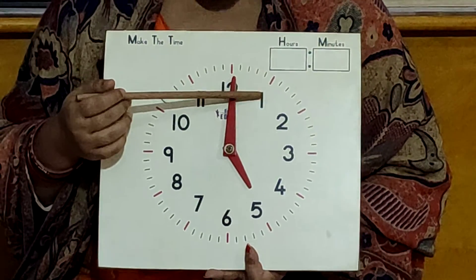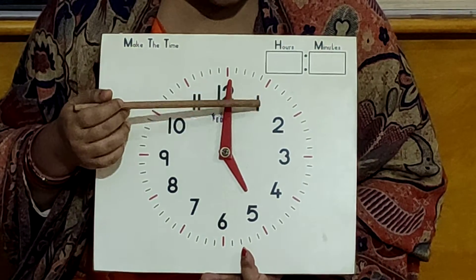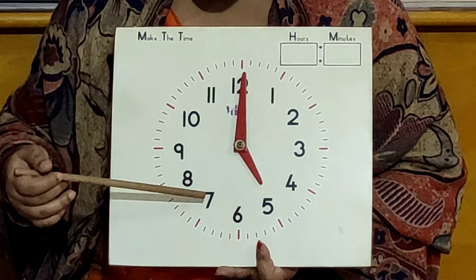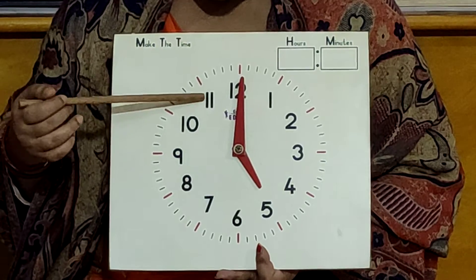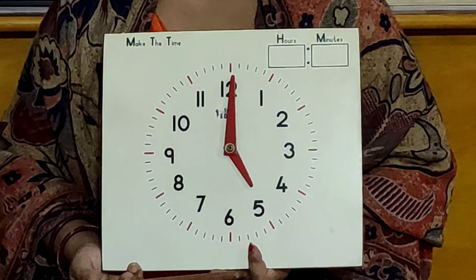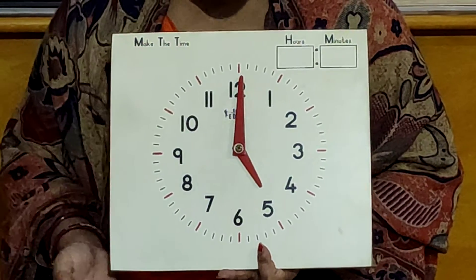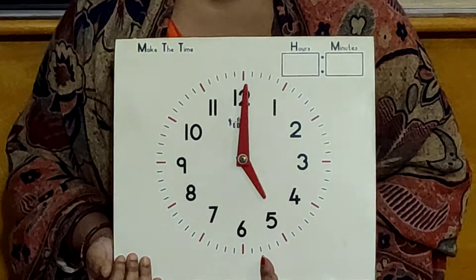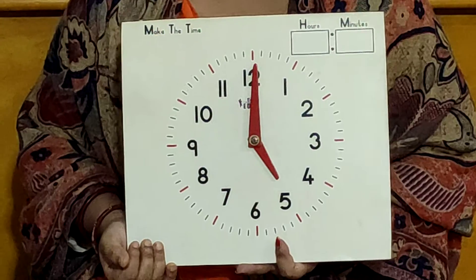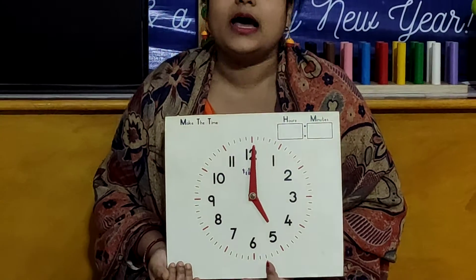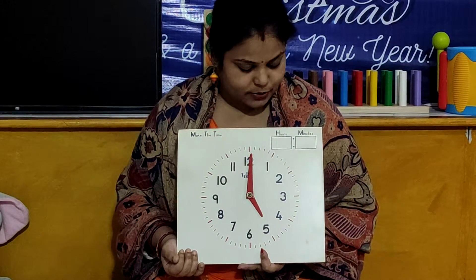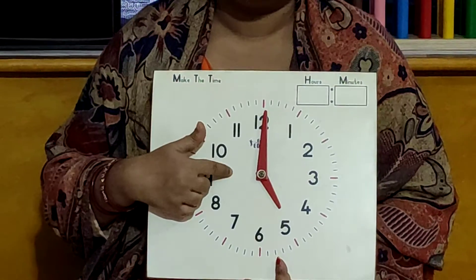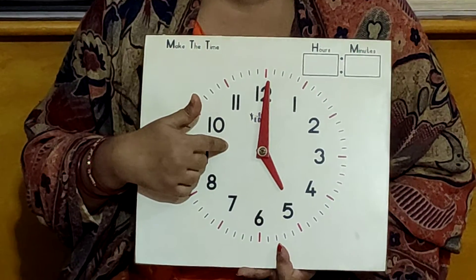You can see the numbers from 1 to 12. So children, there are numbers. Look here: 1, 2, 3, 4, 5, 6, 7, 8, 9, 10, 11, 12. So children, this is our watch and this is our clock. And now we will learn to see the time.